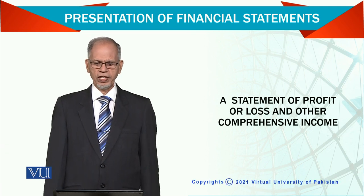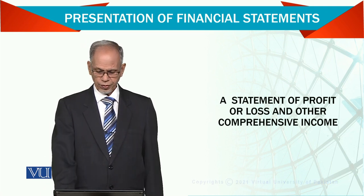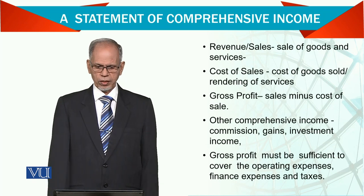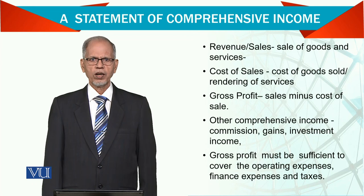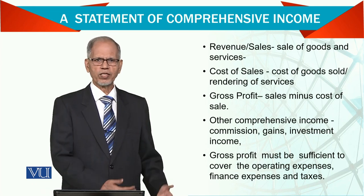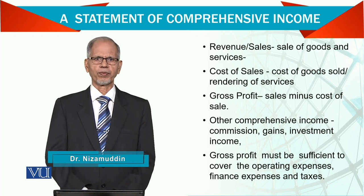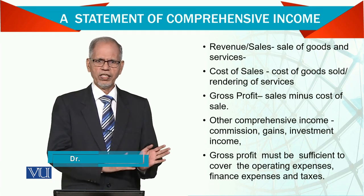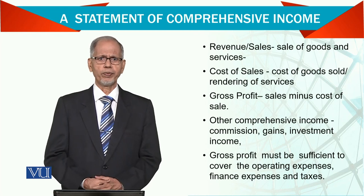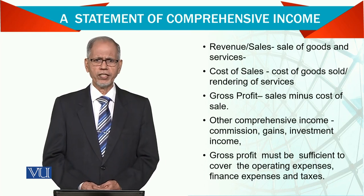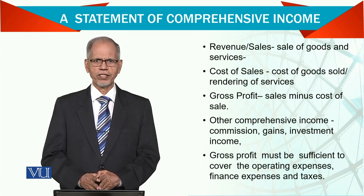Today, we are going to talk about the Income Statement, or we call it Statement of Profit and Loss and Other Comprehensive Income. In this statement, we report revenues — revenue means sales we made if we are selling goods, or the fee we charged if we are rendering services. All these items have standards. For revenue, there is a standard for how it should be recognized, when it should be recorded and reported into the Income Statement. Similarly, cost of goods sold and services rendered cost also have standards.